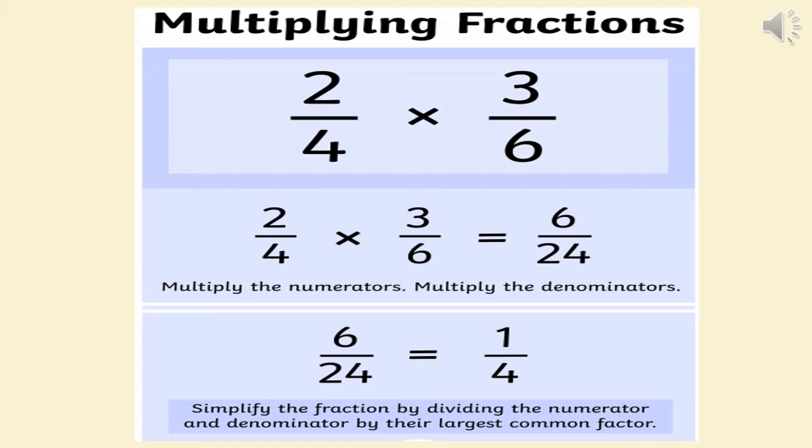Let's just recap how to multiply fractions one more time. Remember, we start by multiplying the numerators, which are the top numbers. We then multiply the denominators, which are the bottom numbers. Our example shows 2 × 3 = 6 and 4 × 6 = 24. We now have 6/24.